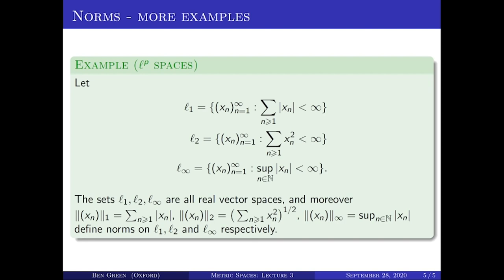These spaces come with natural norms. Little l one can be endowed with the little l one norm: the sum of the absolute value of the x_n's. Little l two comes with the little l two norm: the square root of the sum of x_n squared. And little l infinity comes with a little l infinity norm. These are quite important examples, particularly little l two, which is called Hilbert space — a very fundamental object in mathematics. There are a couple of exercises on it on the example sheets.